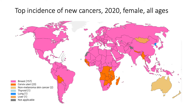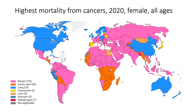Here's an image of the top incidences of new cancers for females in 2020 of all ages. You'll see that the majority of cancer patients are diagnosed with breast cancer, with the exception of a few pockets of cervical and uterine cancers in LMICs. Contrasting that with highest mortality from cancers, lung cancers dominate many high-income countries, yet breast cancer and cervical cancers dominate many low- and middle-income countries.